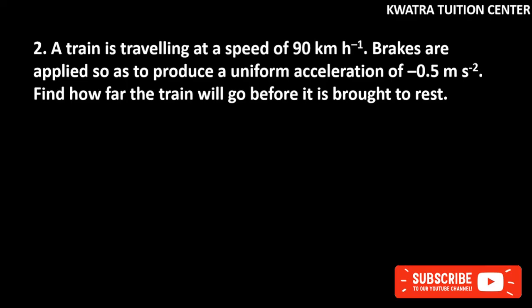Let's start with a new question. A train is traveling at a speed of 90 km per hour. Brakes are applied so as to produce a uniform acceleration of minus 0.5 meter per second squared. Find how far the train will go before it is brought to rest.